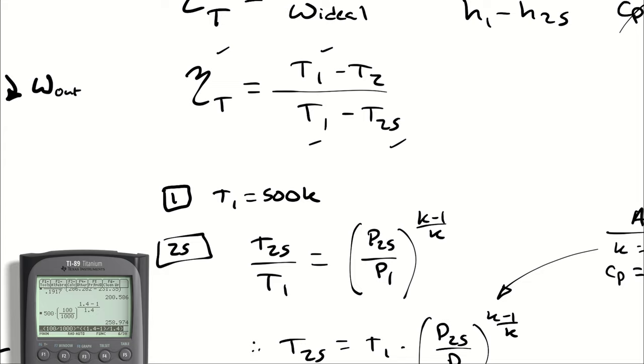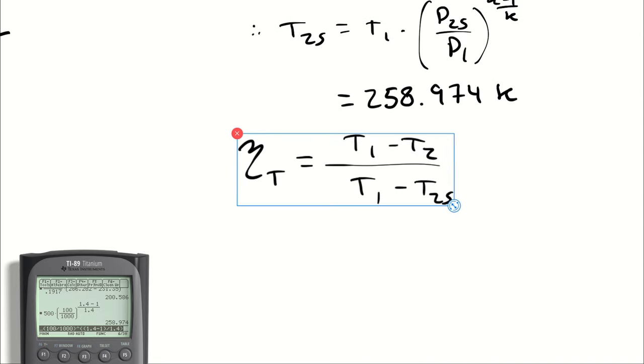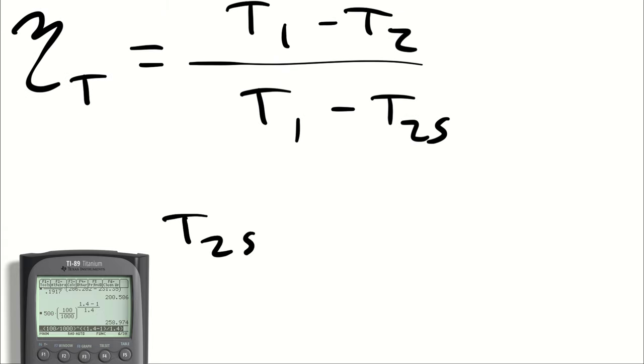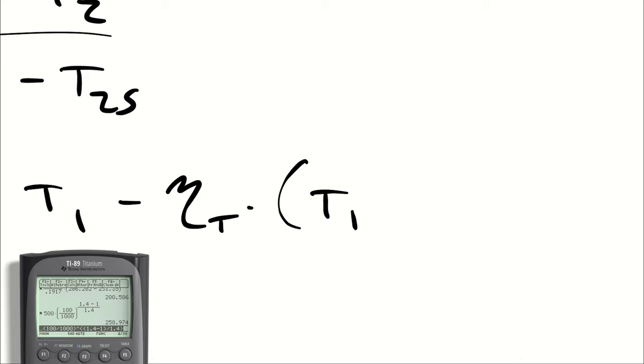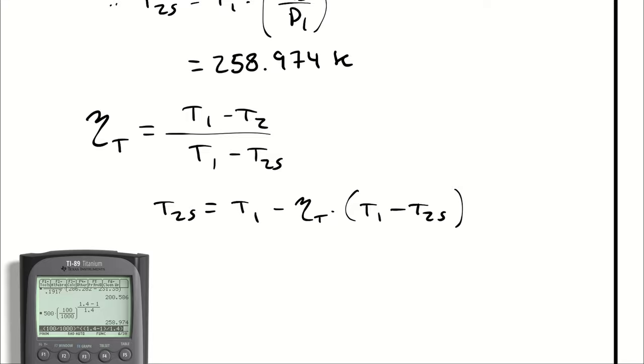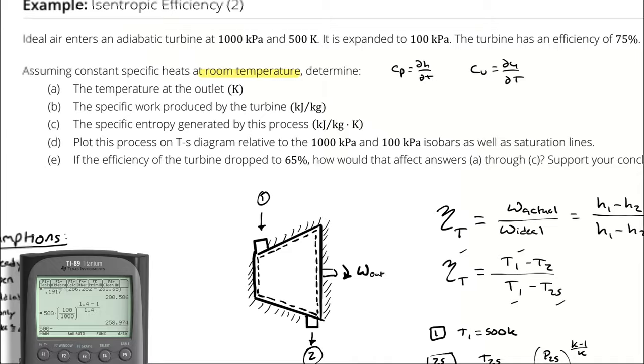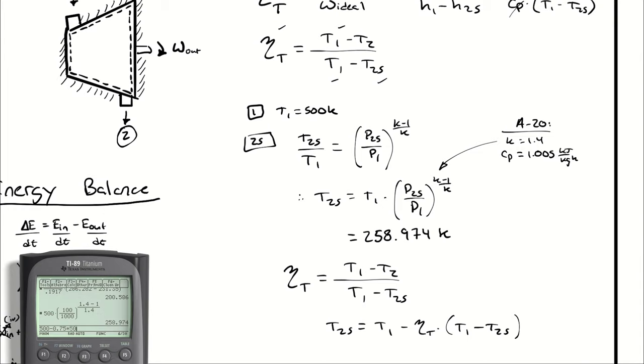We have to use the isentropic efficiency in order to solve for the temperature at the outlet. So we can say T2 is equal to T1 minus eta T multiplied by T1 minus T2S. So T1 was 500. Eta T was 75%, so 0.75 multiplied by 500 minus 258.97.